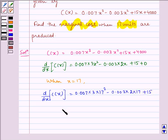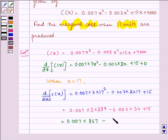It is equal to 0.007 multiplied by 3 times 289 minus 0.003 times 34 plus 15, which equals 0.007 multiplied by 867 minus 0.003 times 34 plus 15.